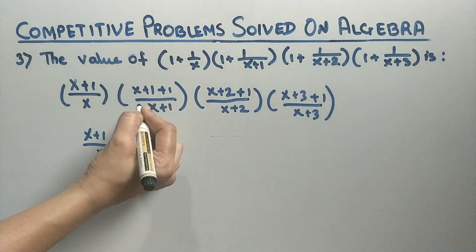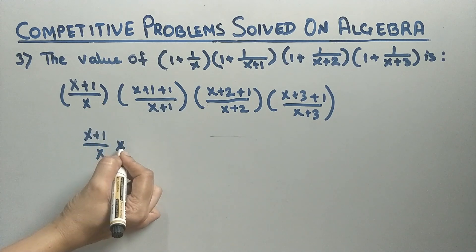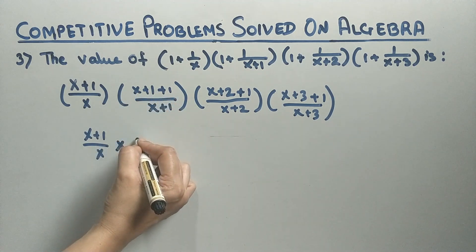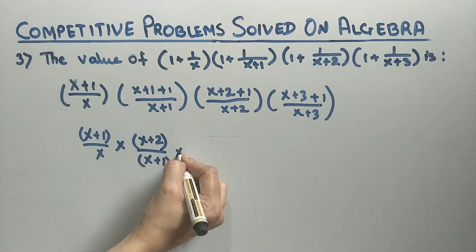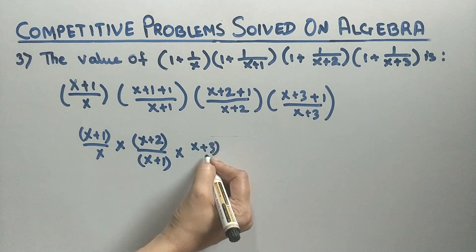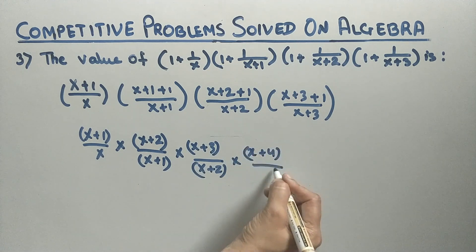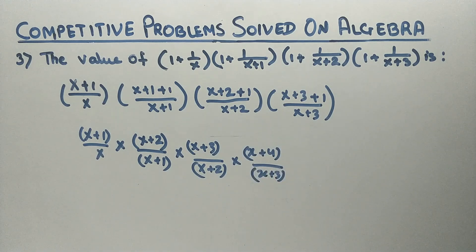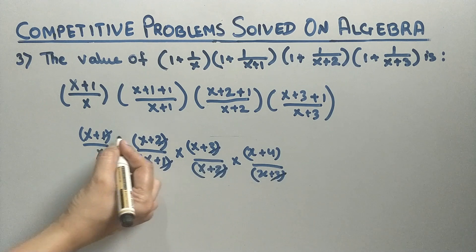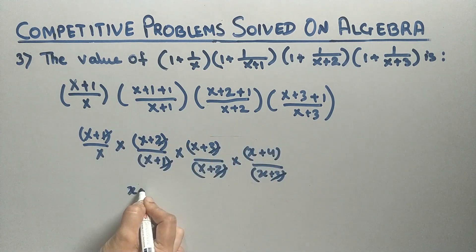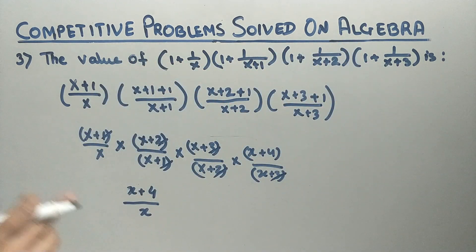Putting the multiplication signs together and writing in separate brackets: (x+1)/x × (x+2)/(x+1) × (x+3)/(x+2) × (x+4)/(x+3). Now we cancel the similar terms: (x+1) cancels with (x+1), (x+2) with (x+2), and (x+3) with (x+3). In the numerator we are left with (x+4) and in the denominator only x, so the value of this expression is (x+4)/x.